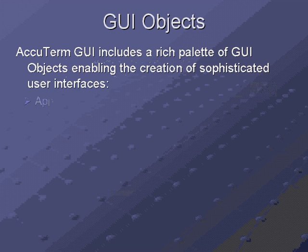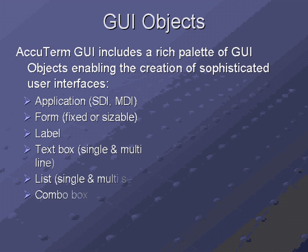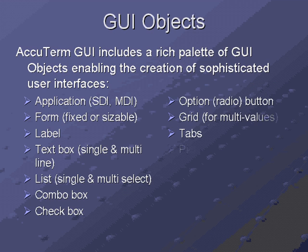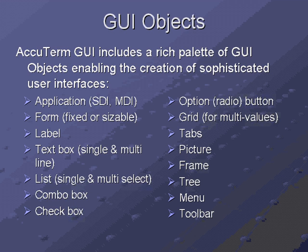AccuTerm GUI includes a rich palette of GUI objects, allowing you to create very sophisticated user interfaces for your multi-value applications. Supported GUI objects include the application object, forms (fixed size or resizable), labels, text boxes, lists, combo boxes, check boxes, option buttons, grids, tabs, pictures, frames, trees, menus, and toolbars.